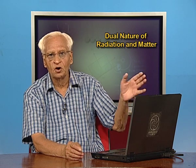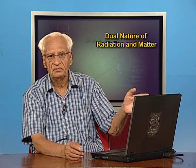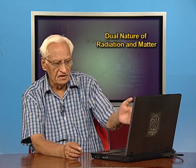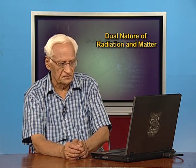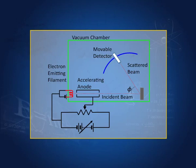What would happen if electrons did not have waves? If electrons behave like particles, being very tiny they would suffer diffused reflection from the irregularities on the crystal surface. Since it is a diffused reflection — which is in all directions — the detector would not detect any change in the intensity of the scattered beam.